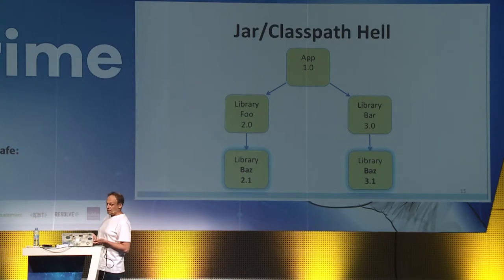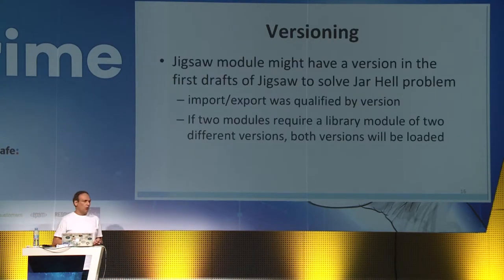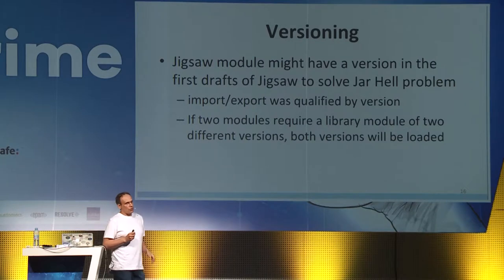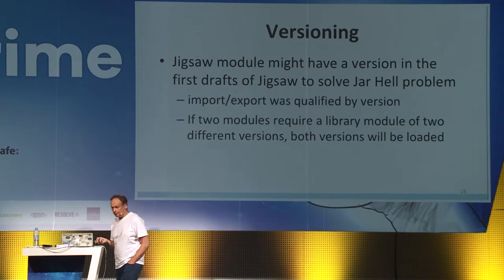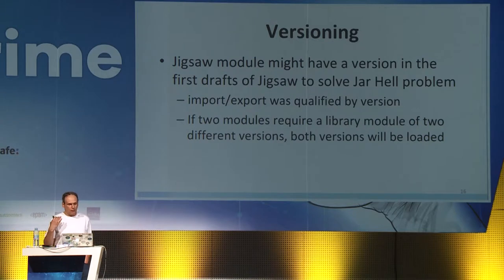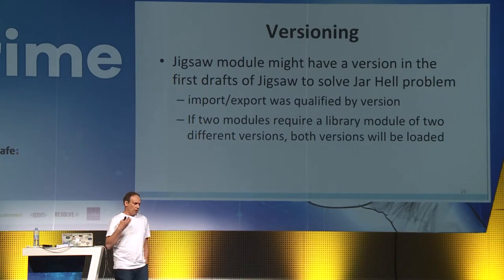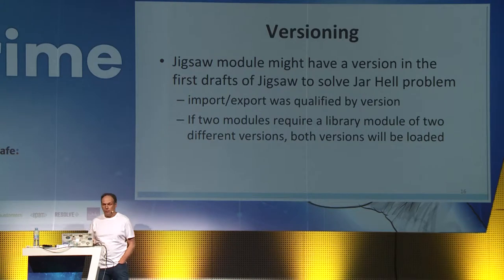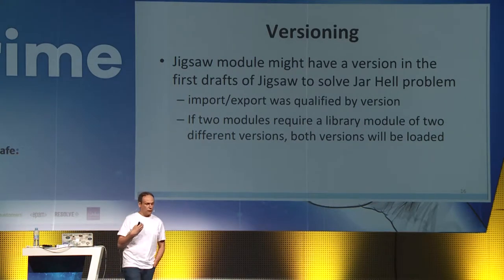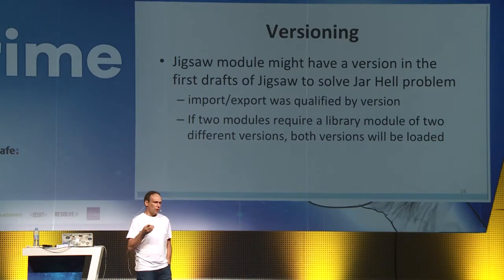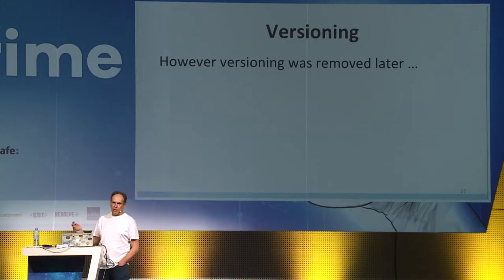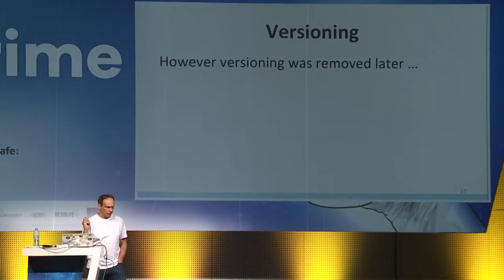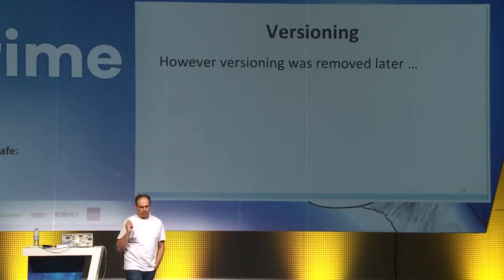To solve this problem, Jigsaw modules might have a version — and in the first Jigsaw drafts they did. Import and export were qualified by a version, so if two modules required a library module at two different versions, both versions would be loaded. However, versioning was later removed. You may ask why.